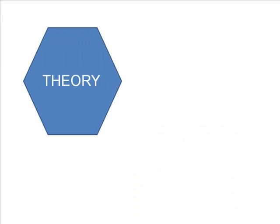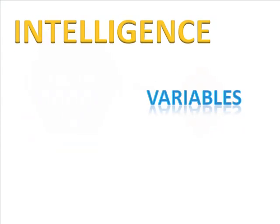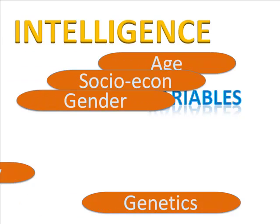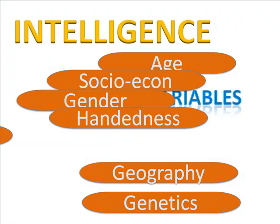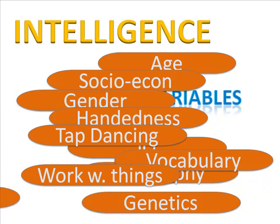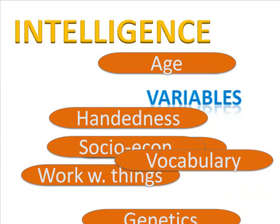We choose the variables based on our theory. We use the theory to select the variables. In our theory of intelligence, there are many possible variables. We want to choose only two or three to study. For cost and simplicity, let's choose intelligence and handedness — left and right handed — for our study.